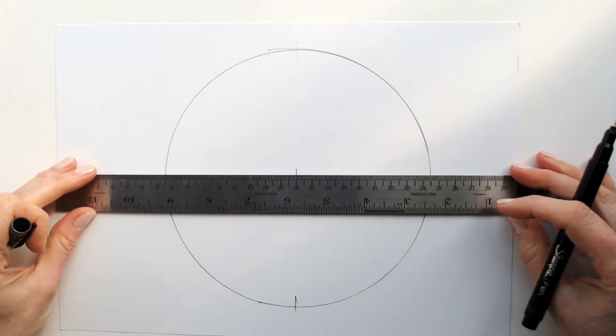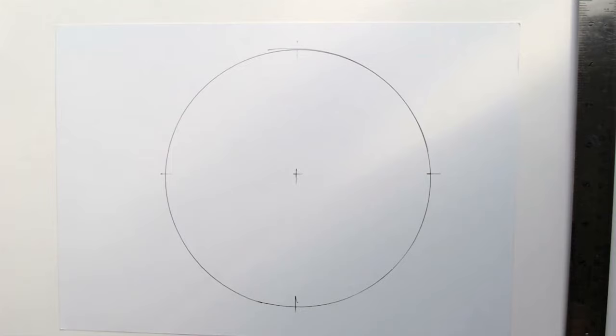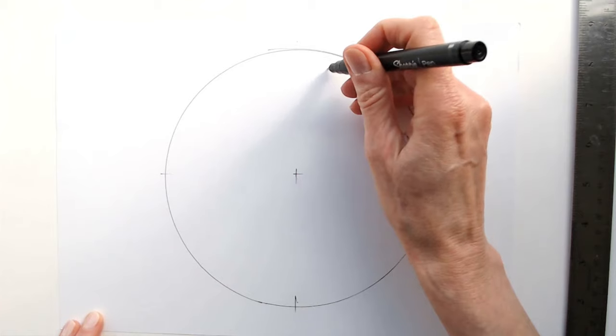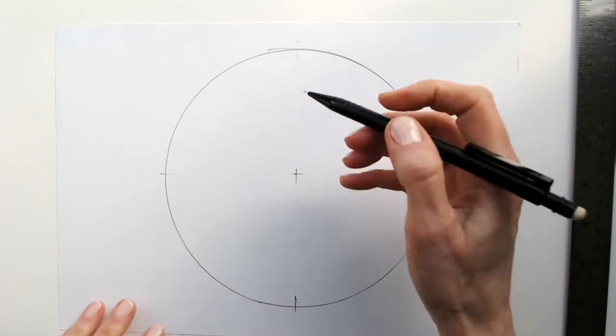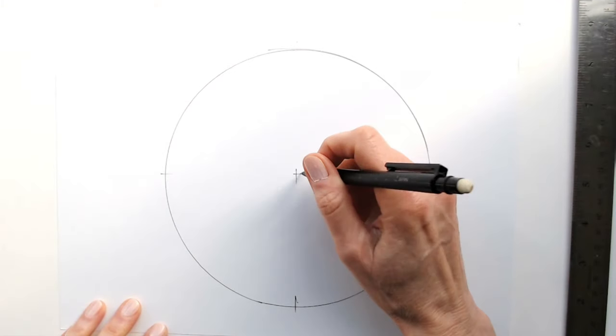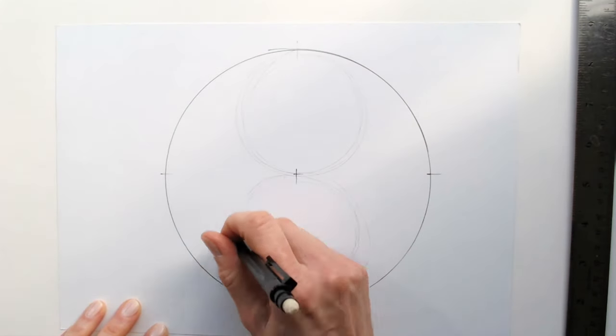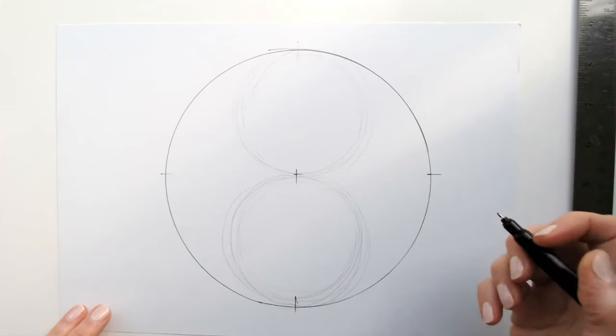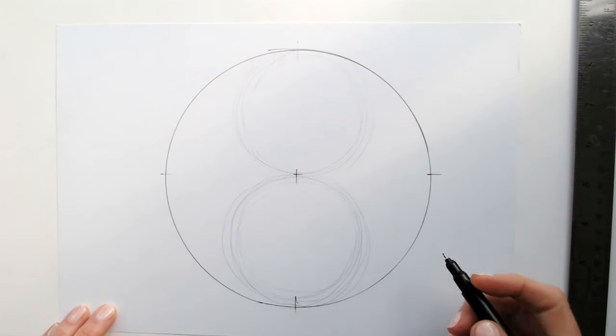You can use it even by sight, no problem. Now we need two circles to create this nice wave. And you can use a pencil, which you can erase later.